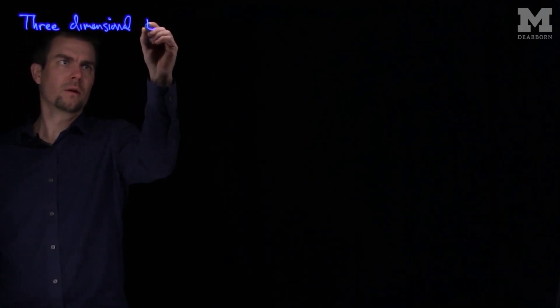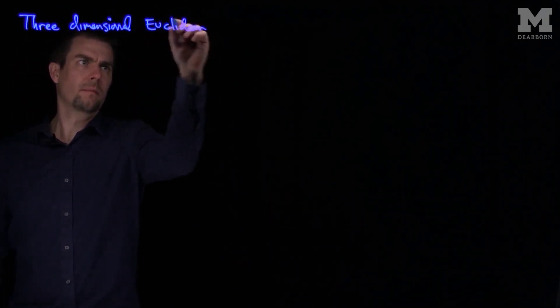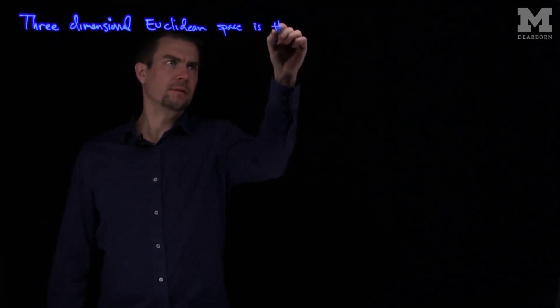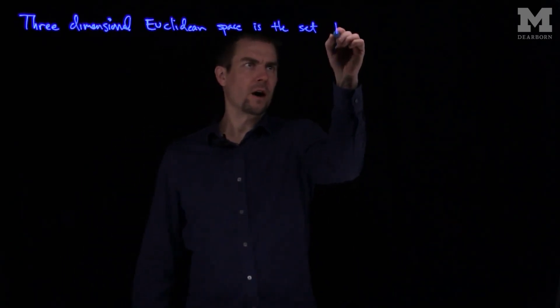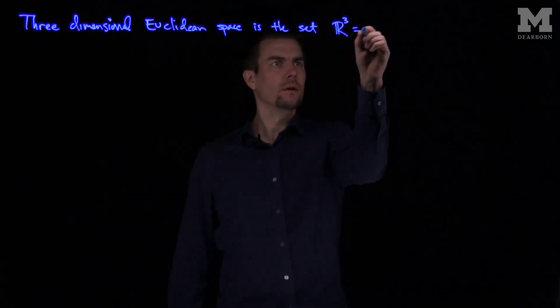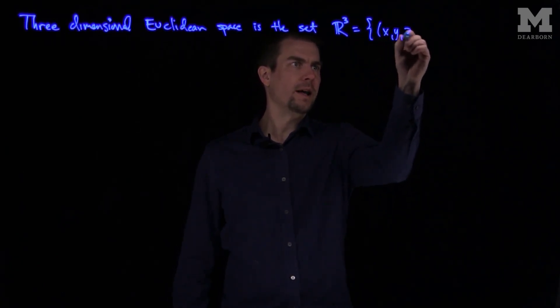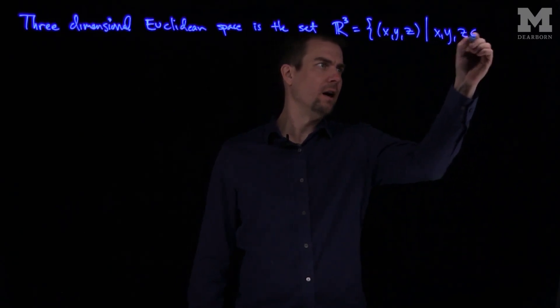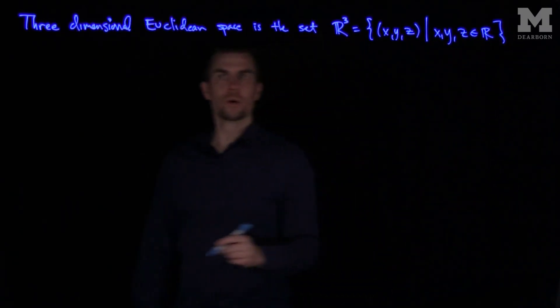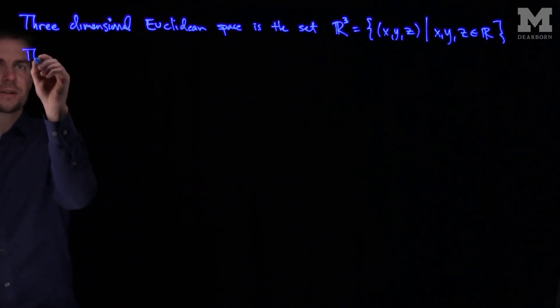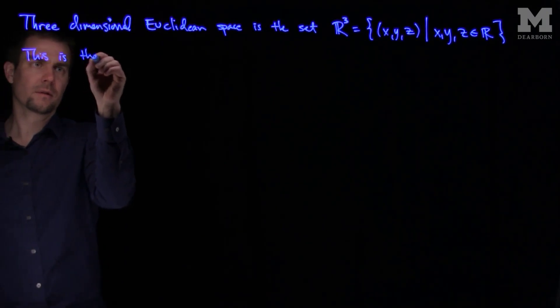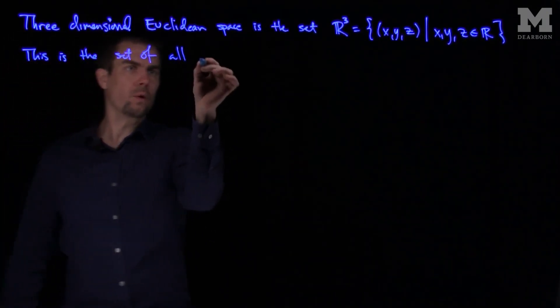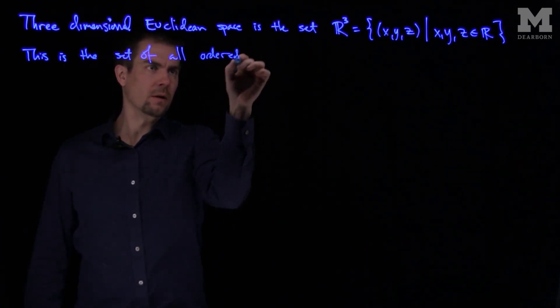Hello students. In this video, we'll introduce three-dimensional Euclidean space. Three-dimensional Euclidean space is the set, which we'll denote as R cubed, of all points x, y, and z such that x, y, and z are real numbers. So three-dimensional Euclidean space is the set of all ordered triples.